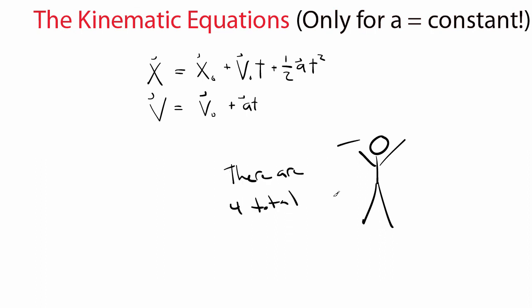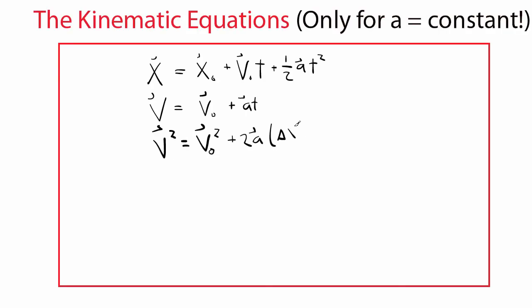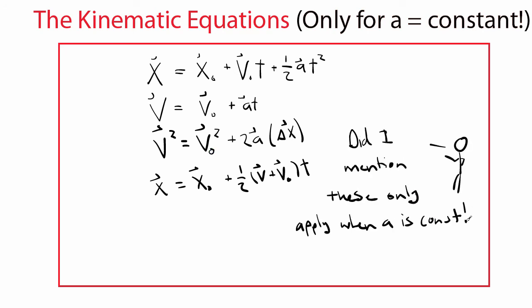It turns out that there are two more equations we can get if we combine these two in strategic ways. These four equations together are a powerful set that can be used to solve for the position, velocity, or even the time it takes to change velocity or position for many different realistic systems.